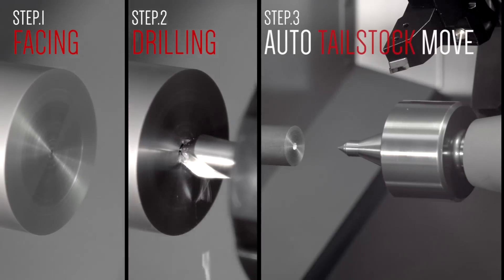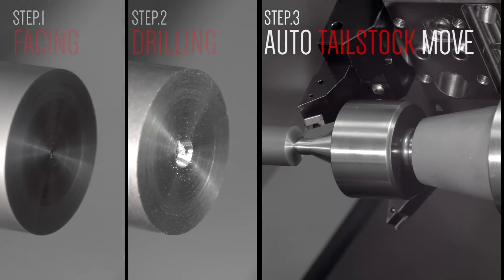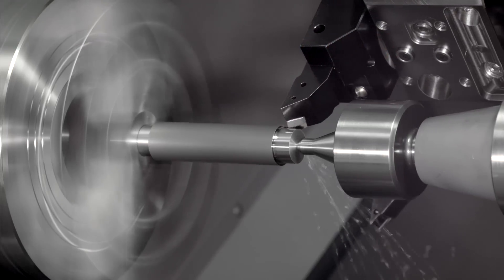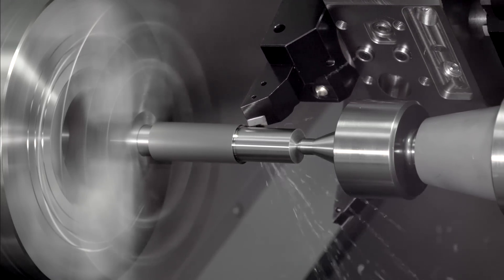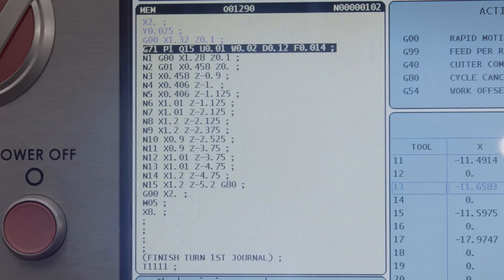Next, the tailstock moves automatically into position. With the part supported, the cutting continues. Using the Haas programmable tailstock, tailstock motion is initiated from within a program. No manual activation is needed.